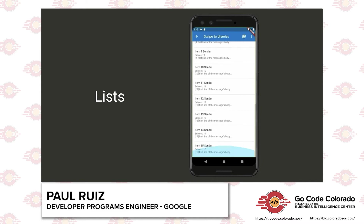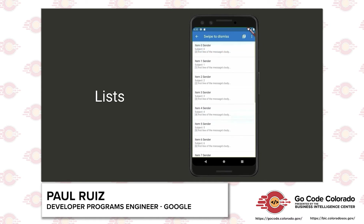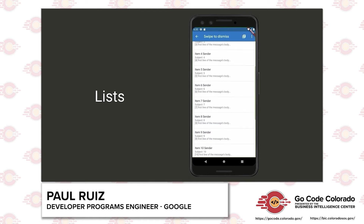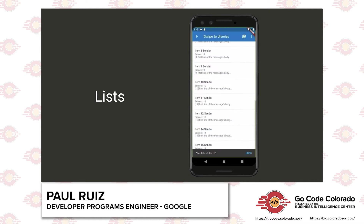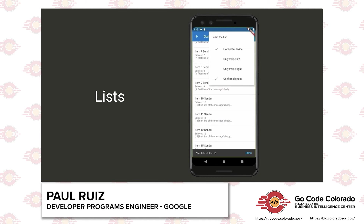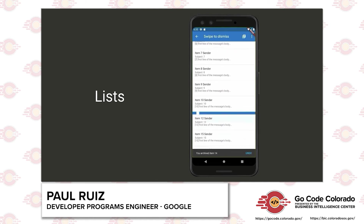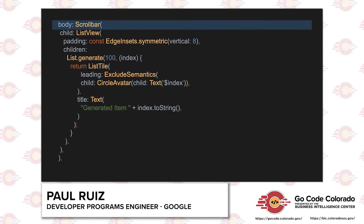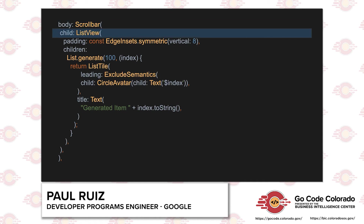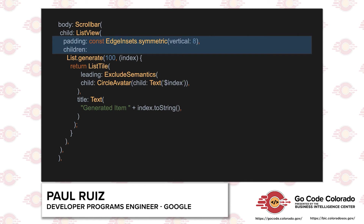The next component to talk about is the list, since most apps are essentially just list and detail screens. You can set up lists for infinite scrolling, have items react to long presses, and add various custom widgets. Starting with a basic list: the ScrollBar widget provides a scroll indicator on the side so users know how far along in the data they are. After that is the ListView widget, which provides the scrollable area containing and controlling the list items. You can set padding at the top and bottom, and the only required property is the children array, which houses the items inside the list.